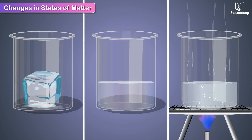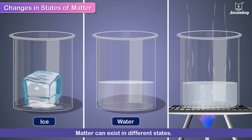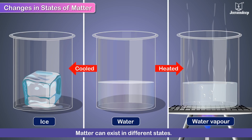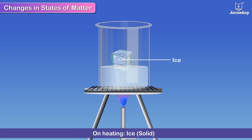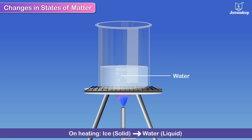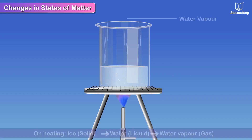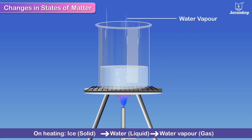Changes in States of Matter. Matter can exist in different states, and changes in states of matter can occur when matter is either heated or cooled. When ice, that is the solid state of matter, is heated, it changes to water, that is the liquid state. And on further heating, it changes into water vapour, that is the gaseous state.